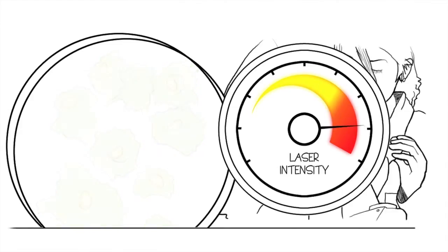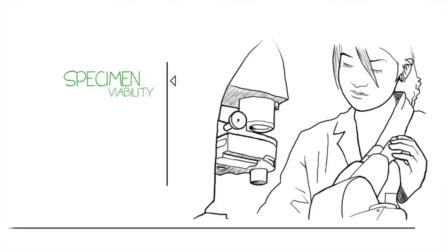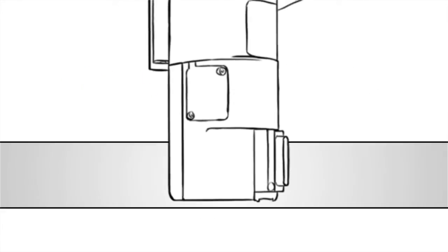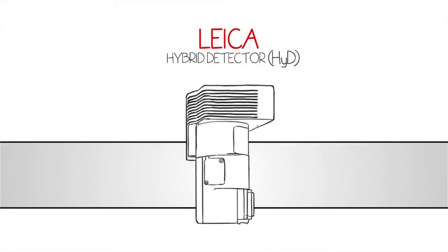It's always a trade-off between preserving your specimen's viability and producing a detectable fluorescent signal for imaging. The Leica hybrid detector, which we call the Hi-D, resolves the need for compromise.